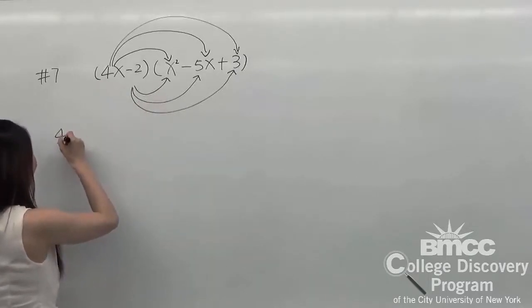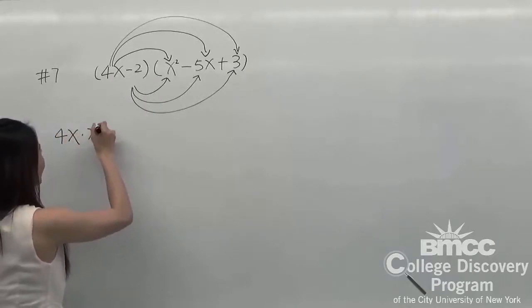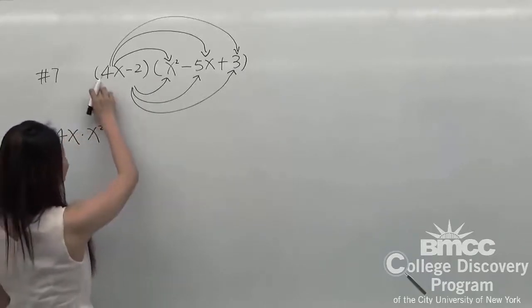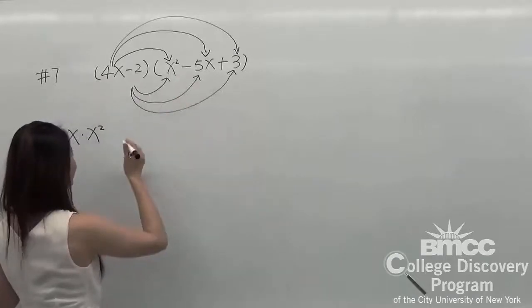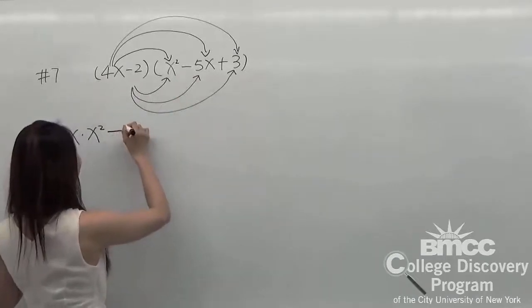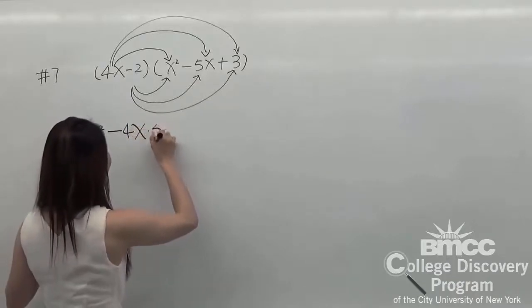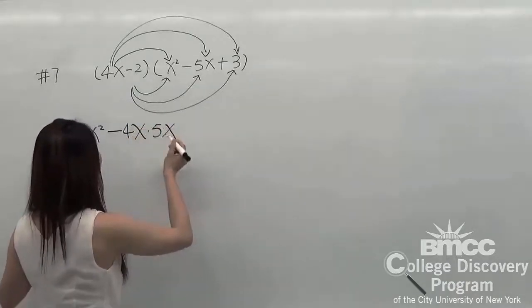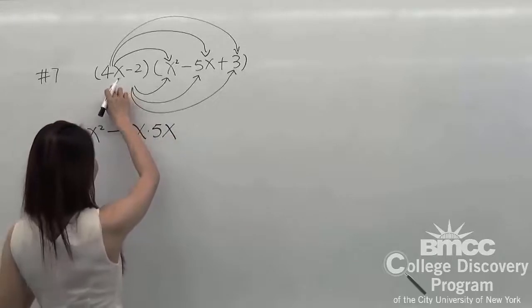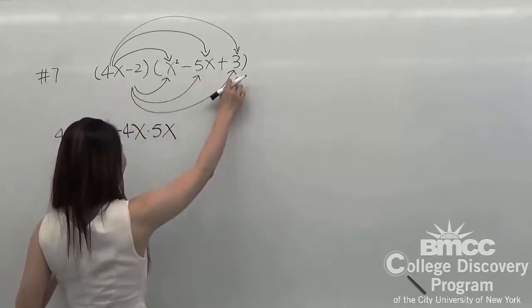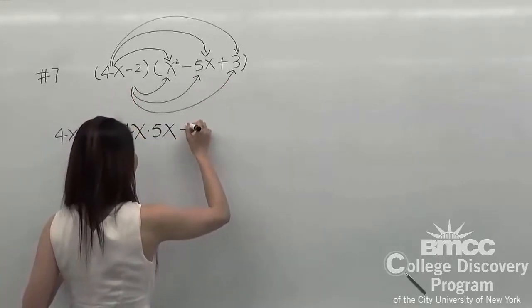So it will be 4x times x squared. Second one, positive negative - it will be negative. So negative 4x times 5x. The last term, 4x times 3, it will be positive.